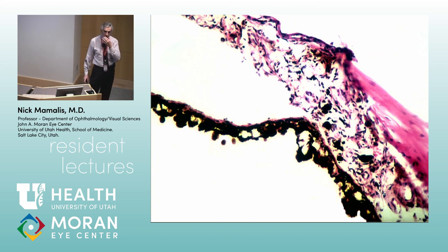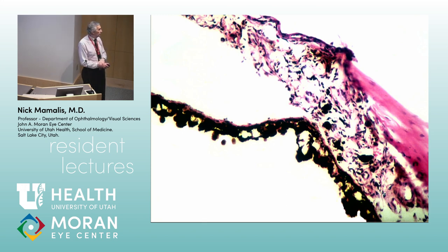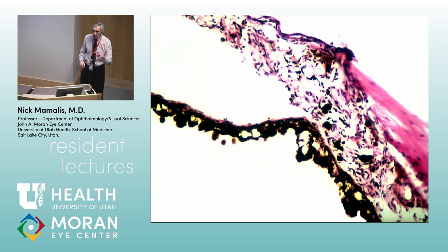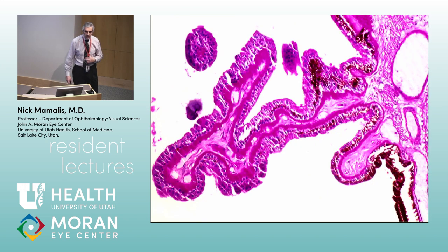In chronic diabetics, the iris pigment epithelium can show lacy vacuolization. This is a finding they love showing on boards. You get lacy vacuolization of the iris pigment epithelium from chronic ischemia.